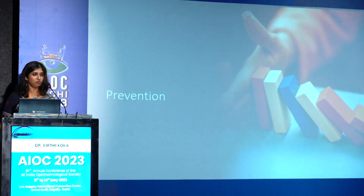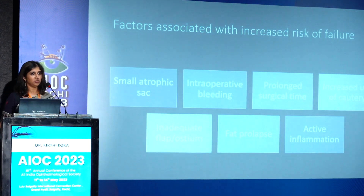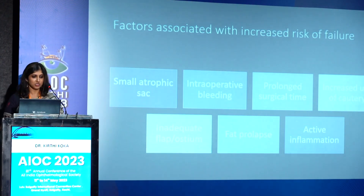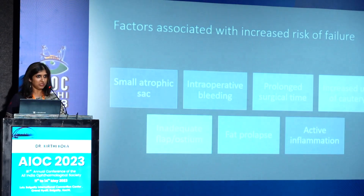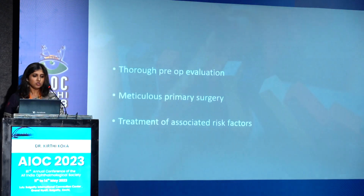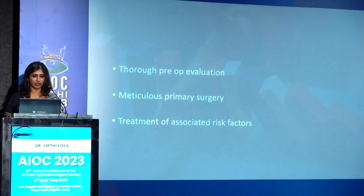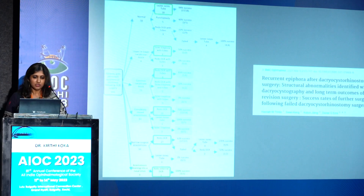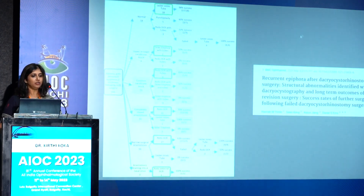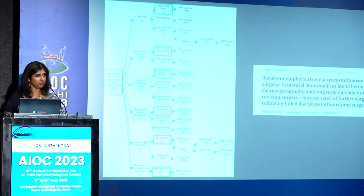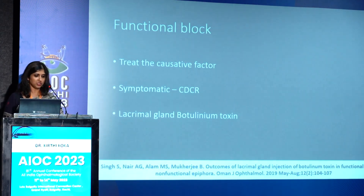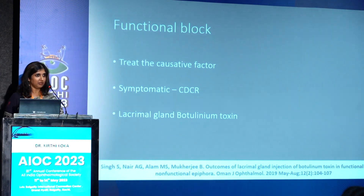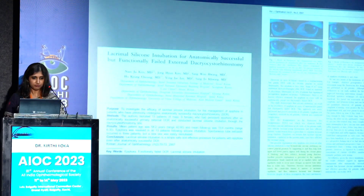Prevention is key — always perform meticulous surgery. Small atrophic sacs, increased bleeding, excessive cautery use, and fat prolapse if the medial wall of the sac is opened incorrectly will all block the ostium. Once you have a failed DCR, management depends on the type. Timlin et al enumerated different types of failures, performed different surgical procedures for each, and recommended which is best. For functional block: first treat the causative factors; if the patient is very symptomatic, a conjunctivodacryocystorhinostomy can be done; alternatively, lacrimal gland botulinum toxin injection can be given. A study by Kim et al suggested intubation for functional failure — intubation keeps the puncta well apposed and capillary action helps drain tears.